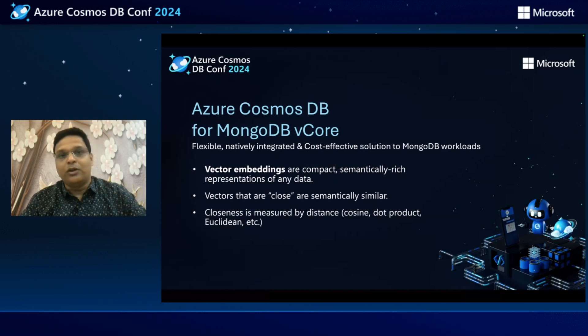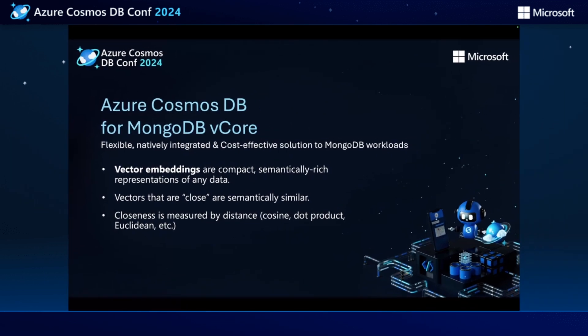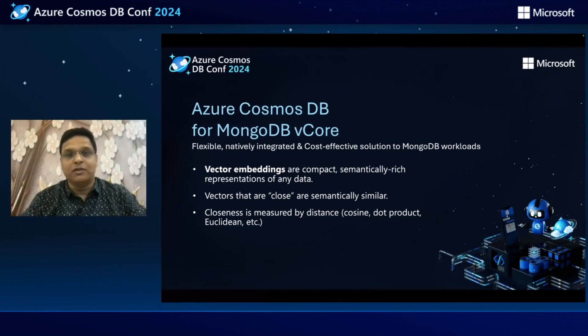Let us start with a quick overview of the product. Azure Cosmos DB for MongoDB vCore was announced as part of the Microsoft Ignite event hosted last November. It works based on a MongoDB-wire protocol, which means that the developer gets all the benefits of using Azure Cosmos DB while still being able to utilize all their familiar tools, SDKs, or drivers that they have been using with their existing MongoDB applications.